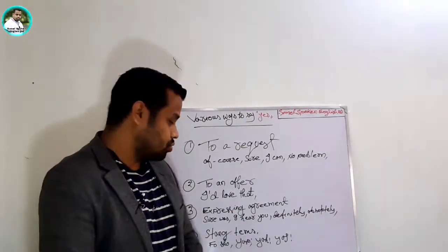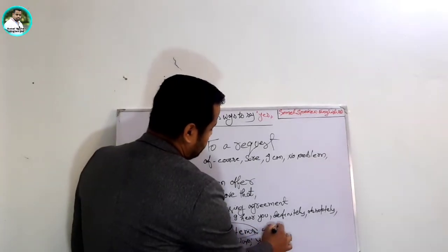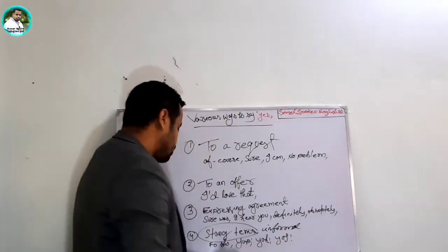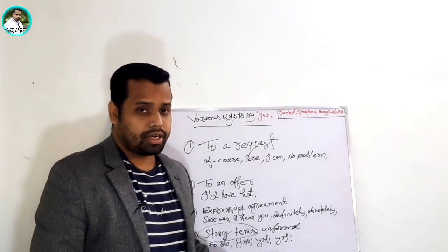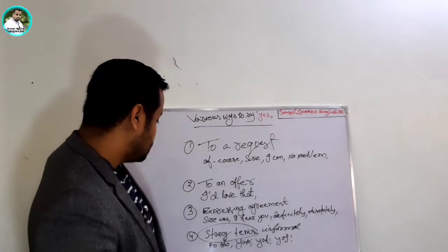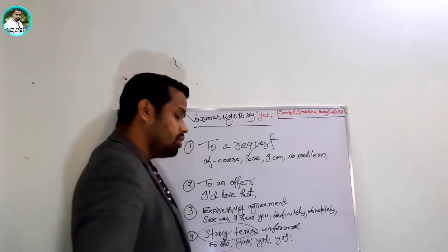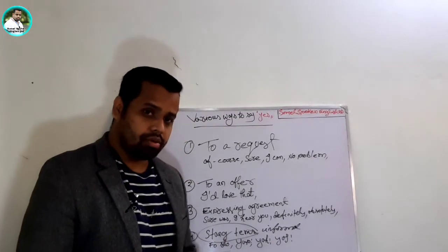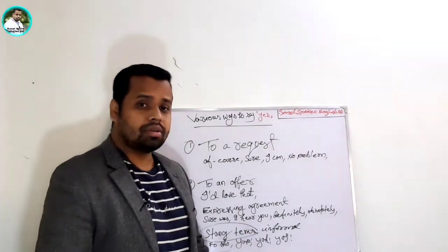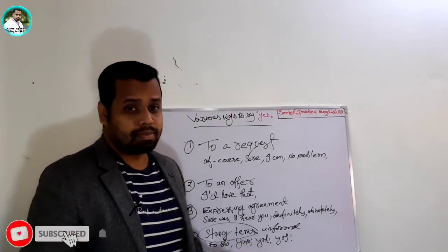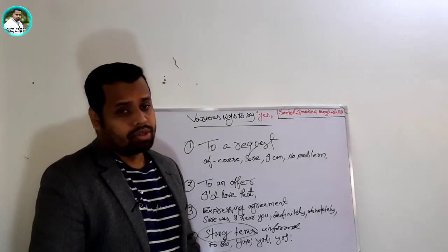So the last one is slang terms. Slang terms are really informal. These words can be used among teenagers and families. These are the words, let's have a look: for sure. It means this is a phrase word, it means yes. For sure I can do it means yup, yeah, yeah, yeah. These are the same expressions you can use with our family members and friends.